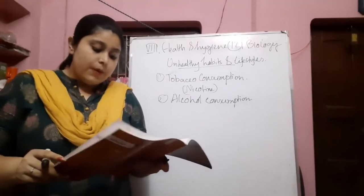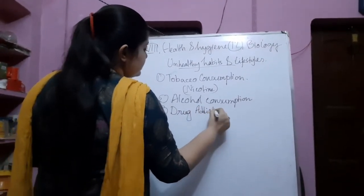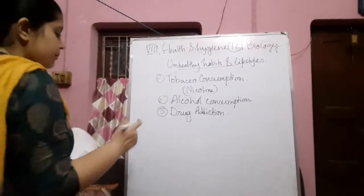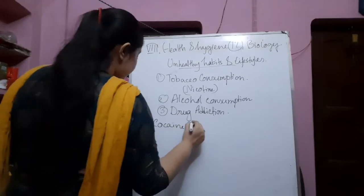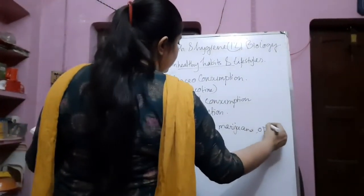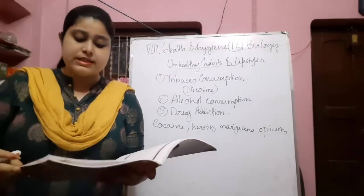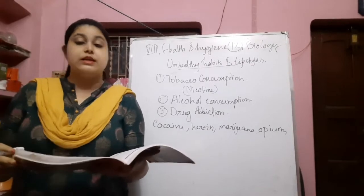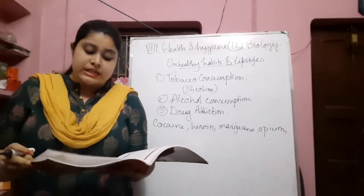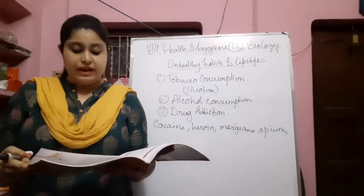The third topic is drug addiction, which is much more dangerous. Narcotics such as cocaine, heroin, marijuana, and opium are very harmful substances that can lead to addiction. Once a person starts consuming drugs, a condition of either physical or physiological dependence is produced — the person cannot live without them. During physical dependence, the body requires a continuous supply of the drug. This is called addiction.